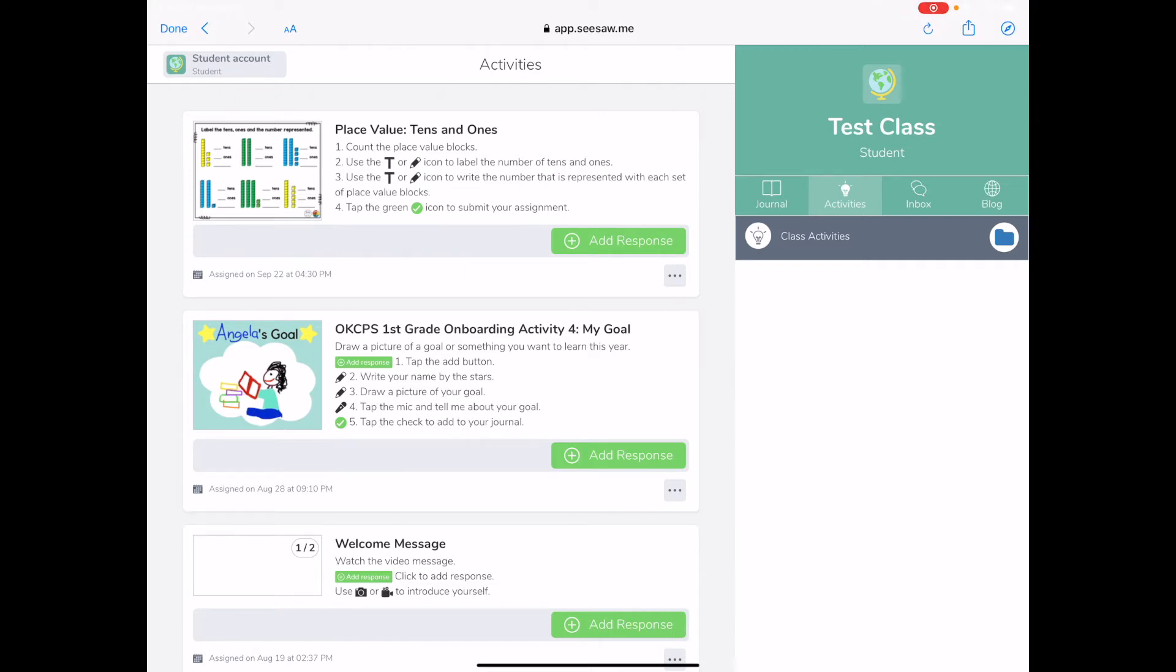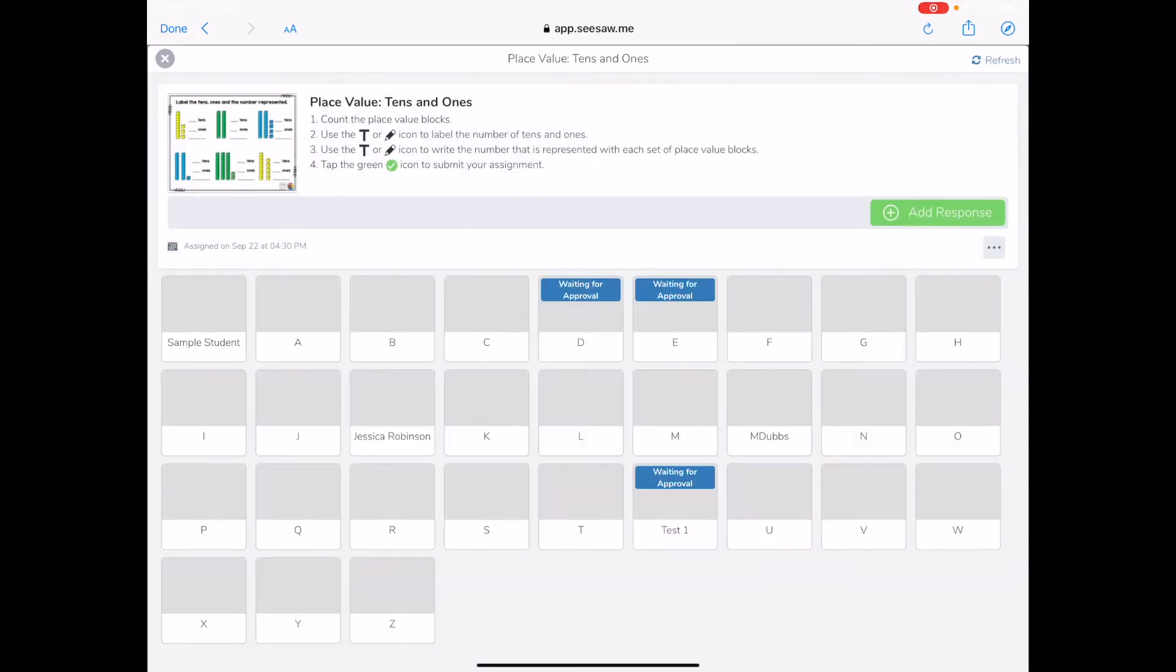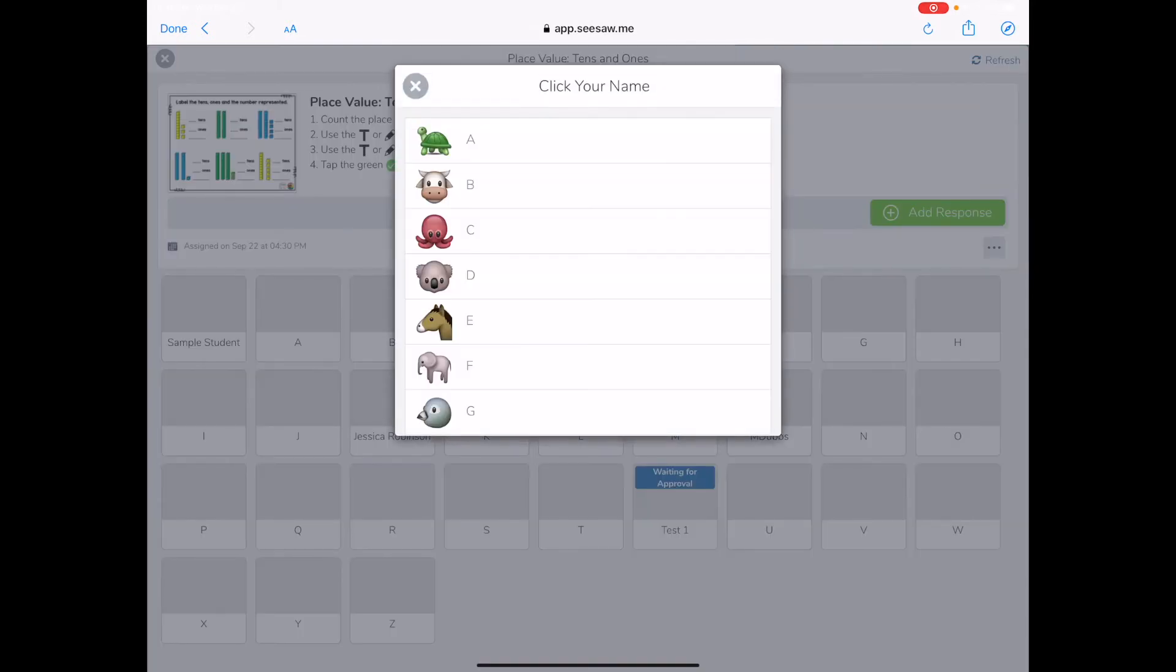And so I'm going to work on this one at the top that says place values, tens, and ones. I can click on it and enlarge it to where I can read all of the directions. And then once I've read all of my directions, I can click the green plus where it says add response.